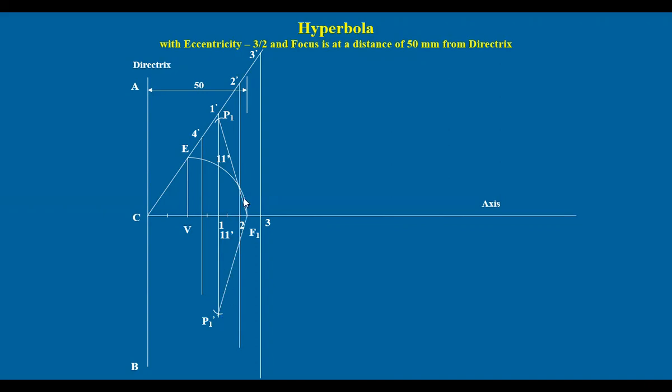Follow the same procedure for other points. 2, 2 dash as radius, F1 as center, intersect this line only. You get a point here P2, in the bottom P2 dash. Likewise continue for all other points.